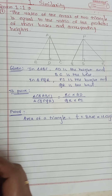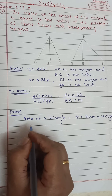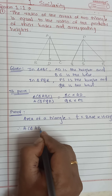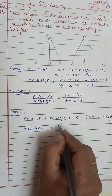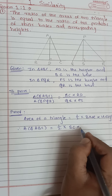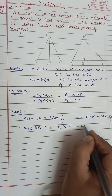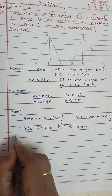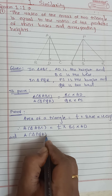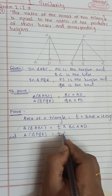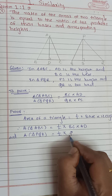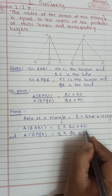Now I will write the area of triangle ABC. Area of triangle ABC is equal to half into base into height, that is half into BC into AD. And area of triangle PQR is equal to half into base into height, that is half into QR into PS.